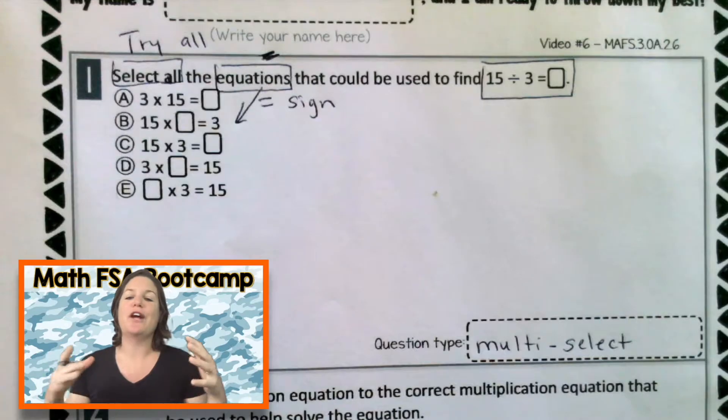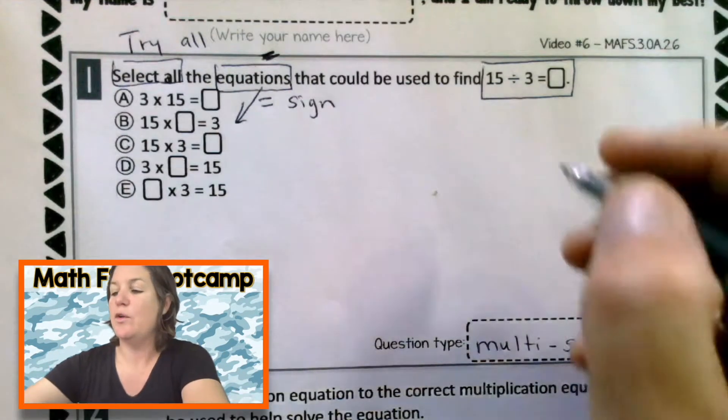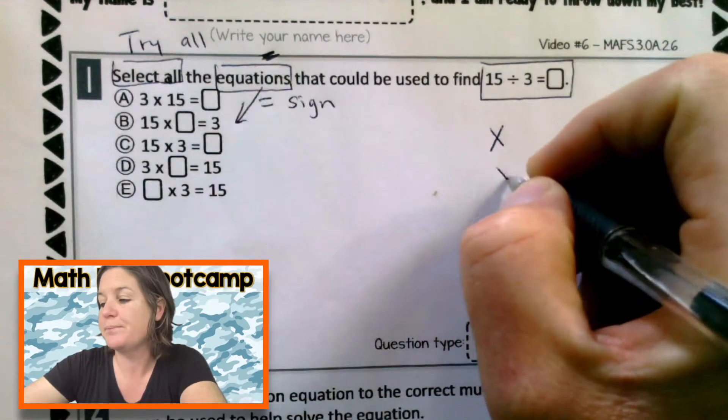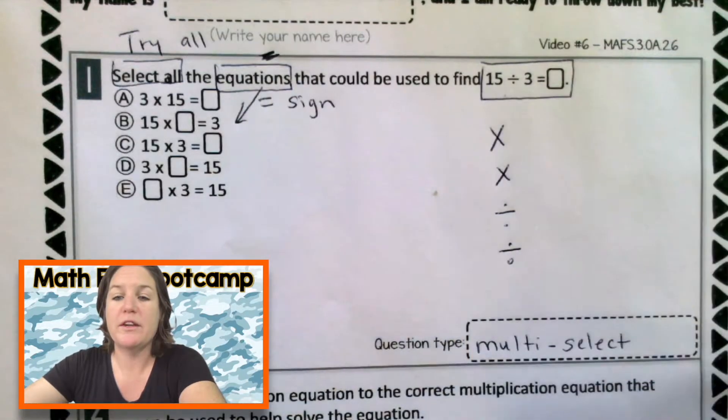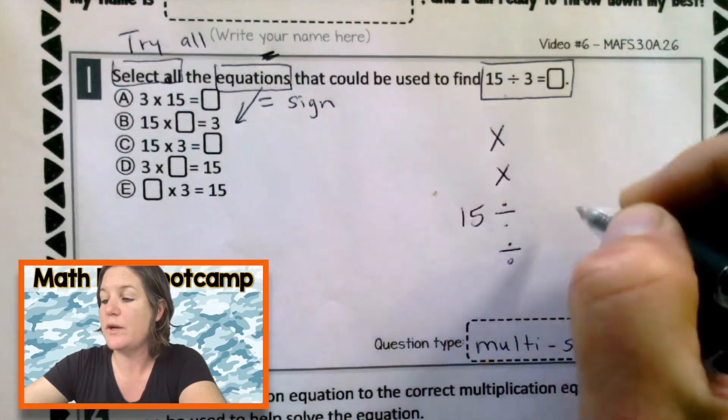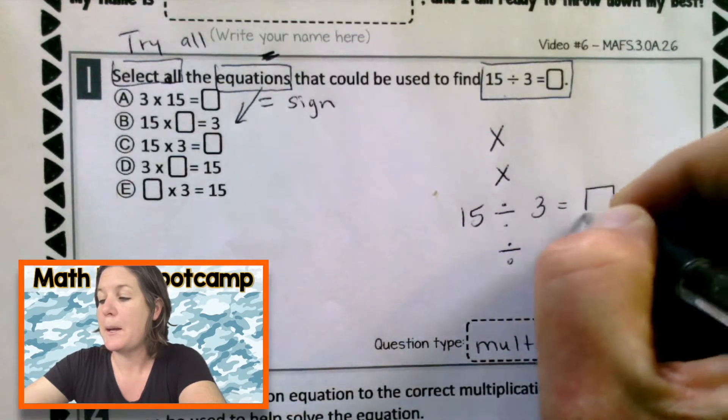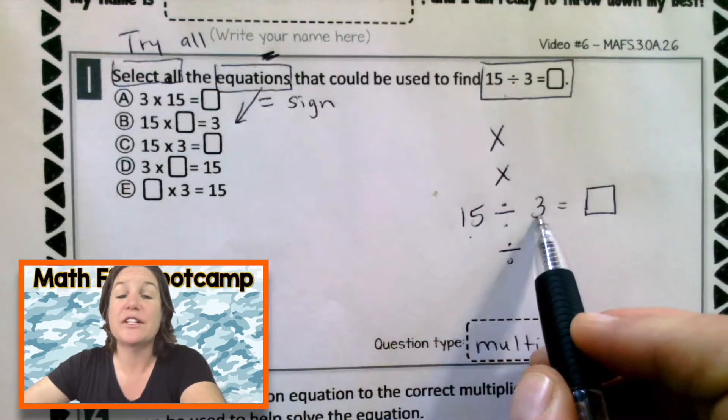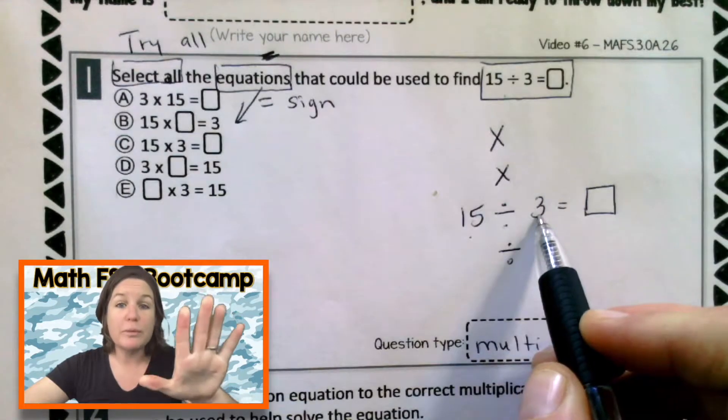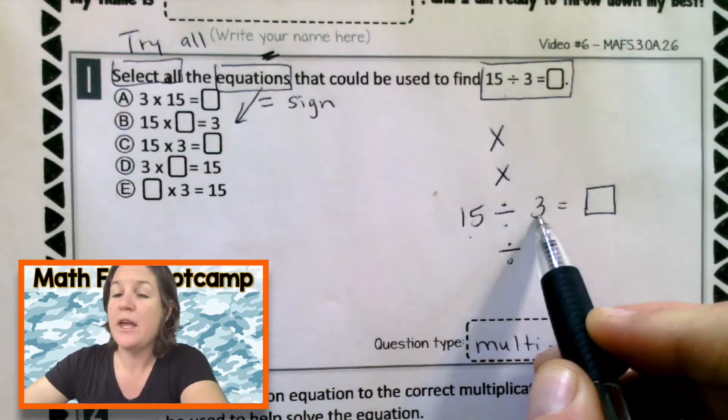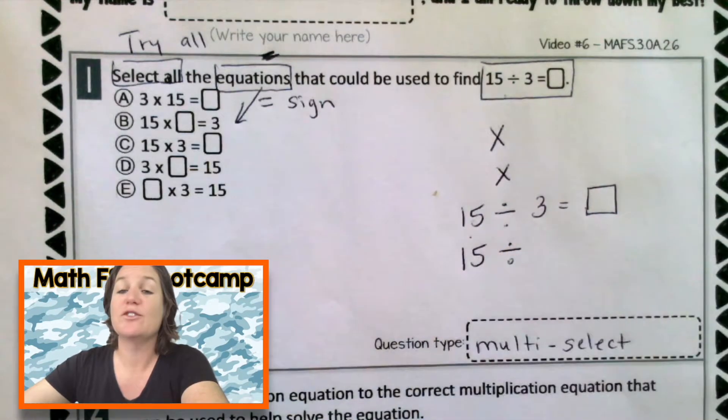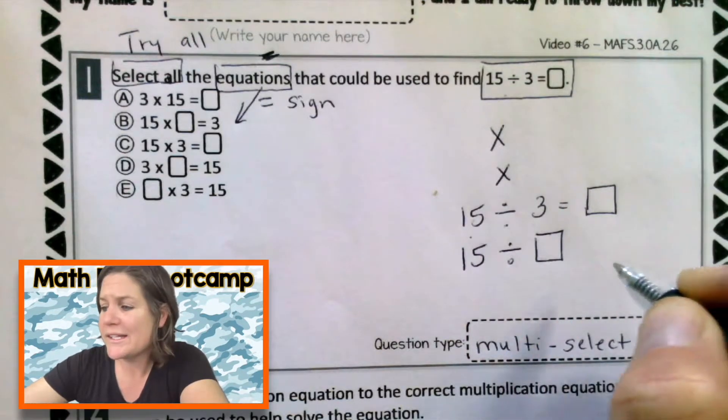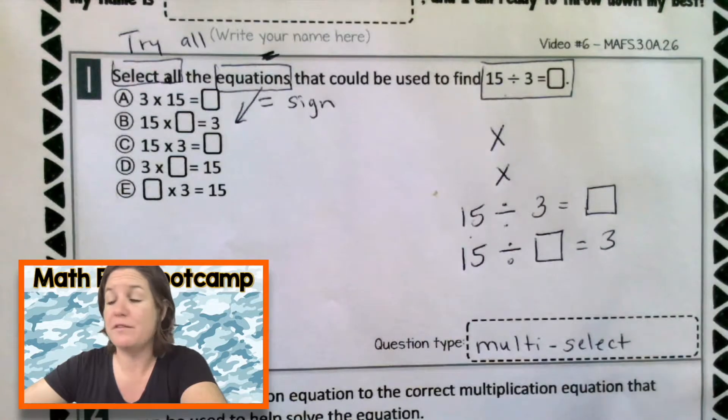All right, so this question is testing to see whether or not we know our fact families. So for a multiplication and division fact family, there are two multiplications and two divisions. We have one of the divisions right there. So I'm going to go ahead and put the division equation 15 divided by 3 equals right there. That means that 15 is the total and we're dividing it by 3, either into 3 groups or 3 in each group. So let's go ahead and flip that around now and say that we had 15 total. And now let's put the unknown there. 15 divided by what equals 3. That would be a part of our fact family here.